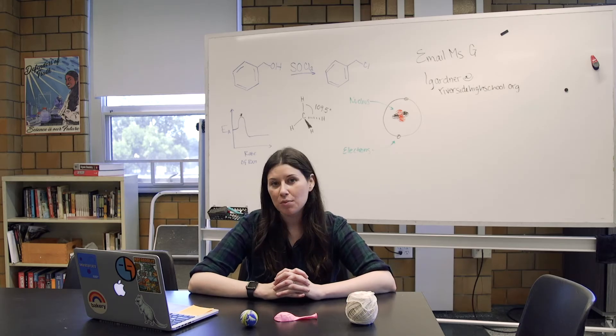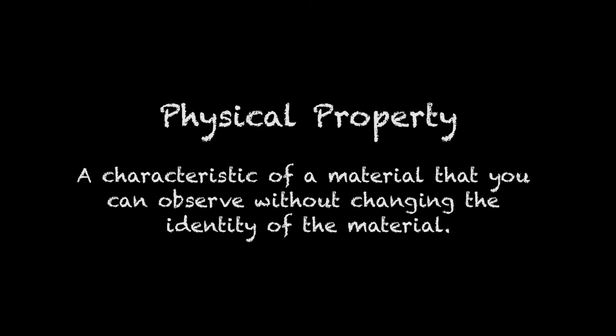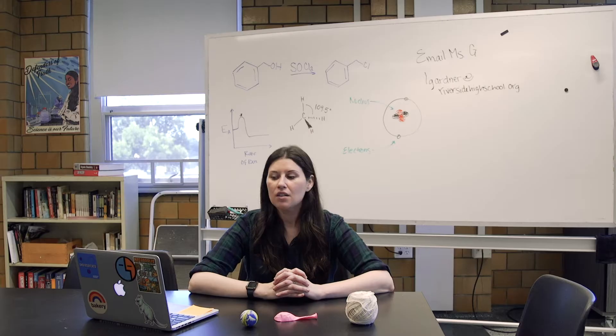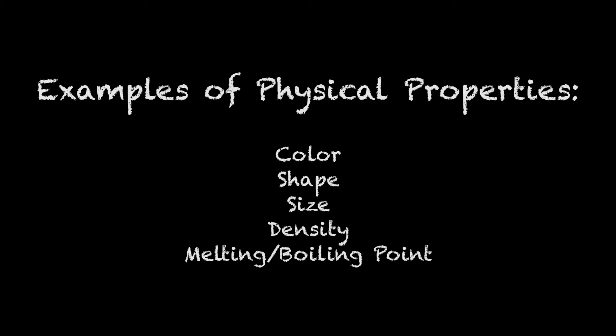Let's start with the physical property — this is your first definition to write down. A physical property is a characteristic of a material that you can observe without changing the identity of the material. Some examples are color, shape, size, density, or the melting or boiling point of the material.